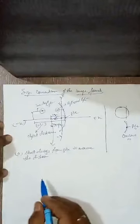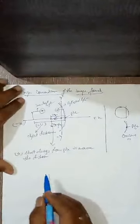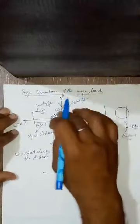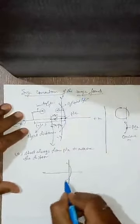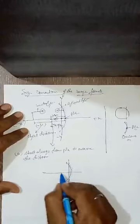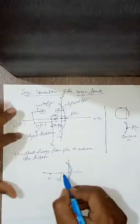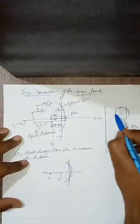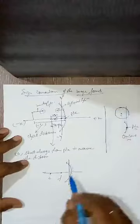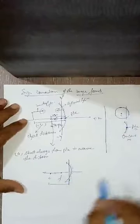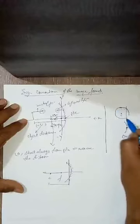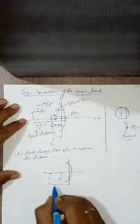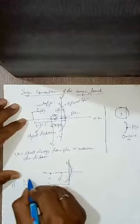Now coming to the focal point and center of curvature. Let me make a new diagram with a concave mirror. Center of curvature is the center point of that hollow spherical glass from which the mirror has been cut. And focal point is half of the radius. This distance is equal to the radius, and focal point is half of the radius.